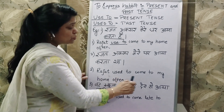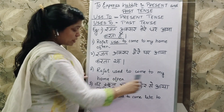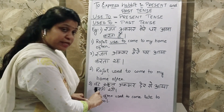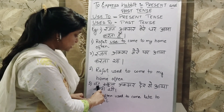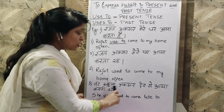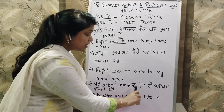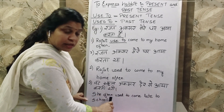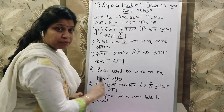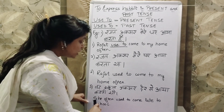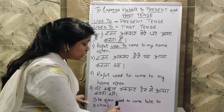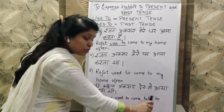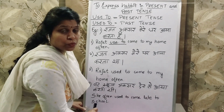Rajat used to come to my house often. Next example: 'Behen school aksar der se aya karti thi' — karti thi, past tense me habit show hori hai. She often used to come late to school.